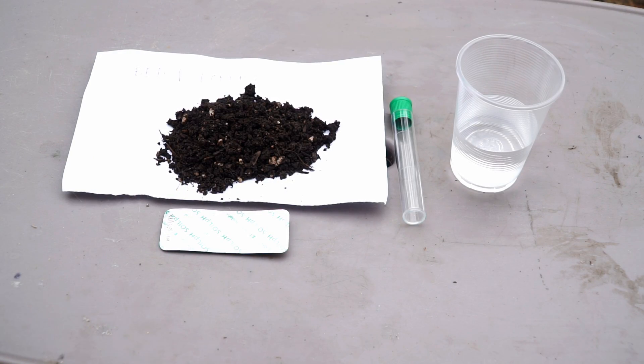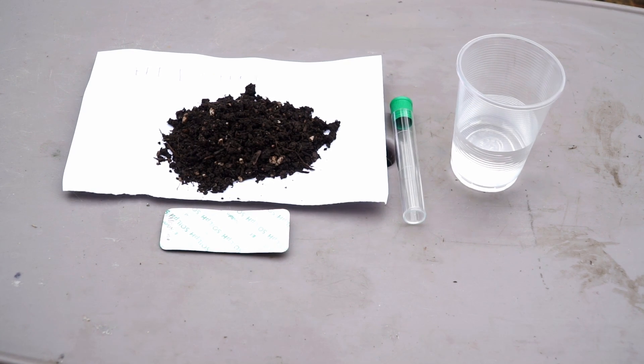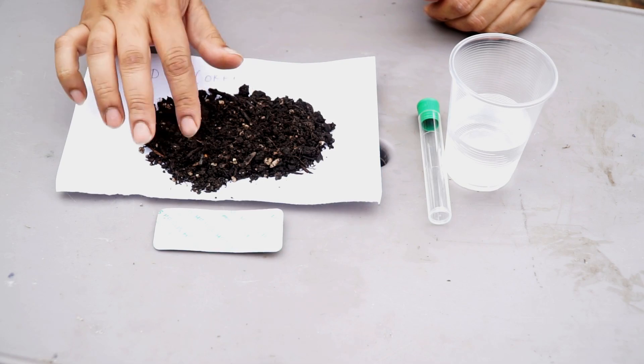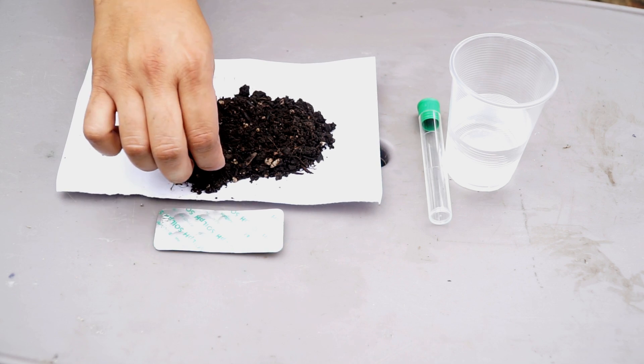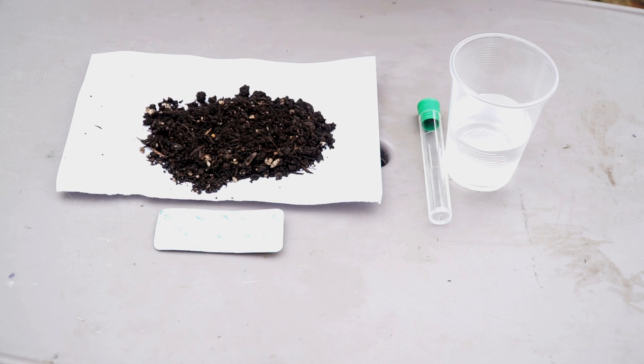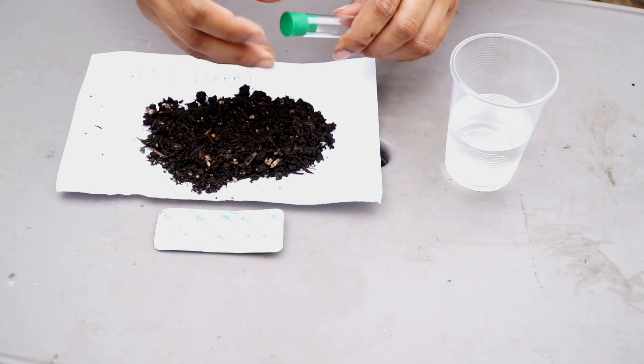The first test is one of the most important tests called the pH test, which basically measures how acidic or alkaline your soil is.